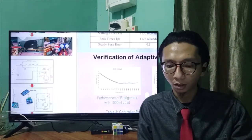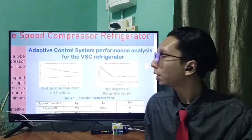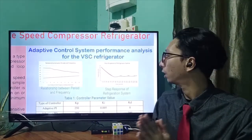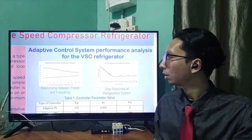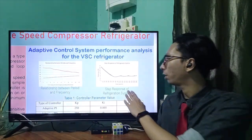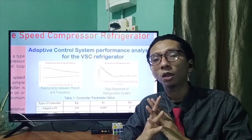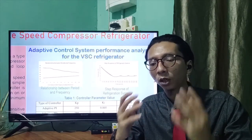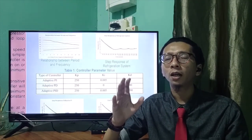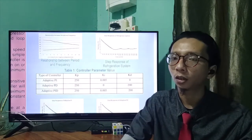Now I will go through the results of my research. Here is the mathematical modeling of the response of the system. We can see the relationship between the period and frequency, and on this graph you can see the step response of the refrigeration system. We need the mathematical modeling in order to develop the adaptive controller. From the mathematical model developed, we can then calculate the theorized values for the parameters of the adaptive controller.